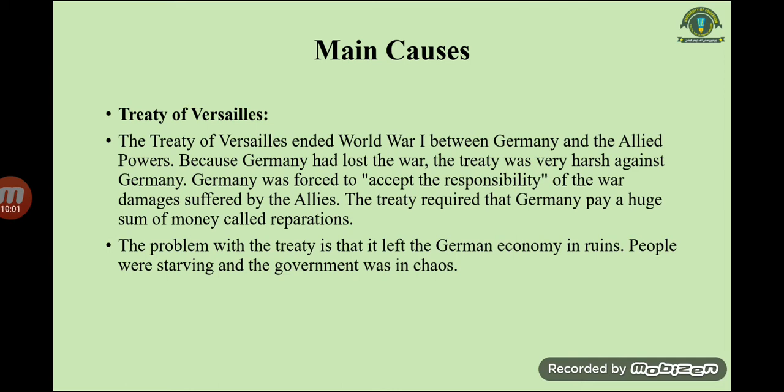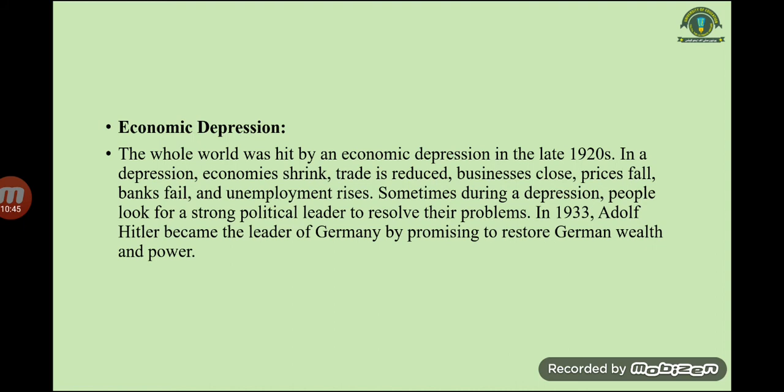Because Germany had lost World War One, the Treaty of Versailles was very harsh against Germany. Germany was forced to accept responsibility for the war damages suffered by the Allies and was required to pay a huge sum of money called reparations. This left the German economy in ruins — people were starving and government was in chaos. The next cause is the economic depression.